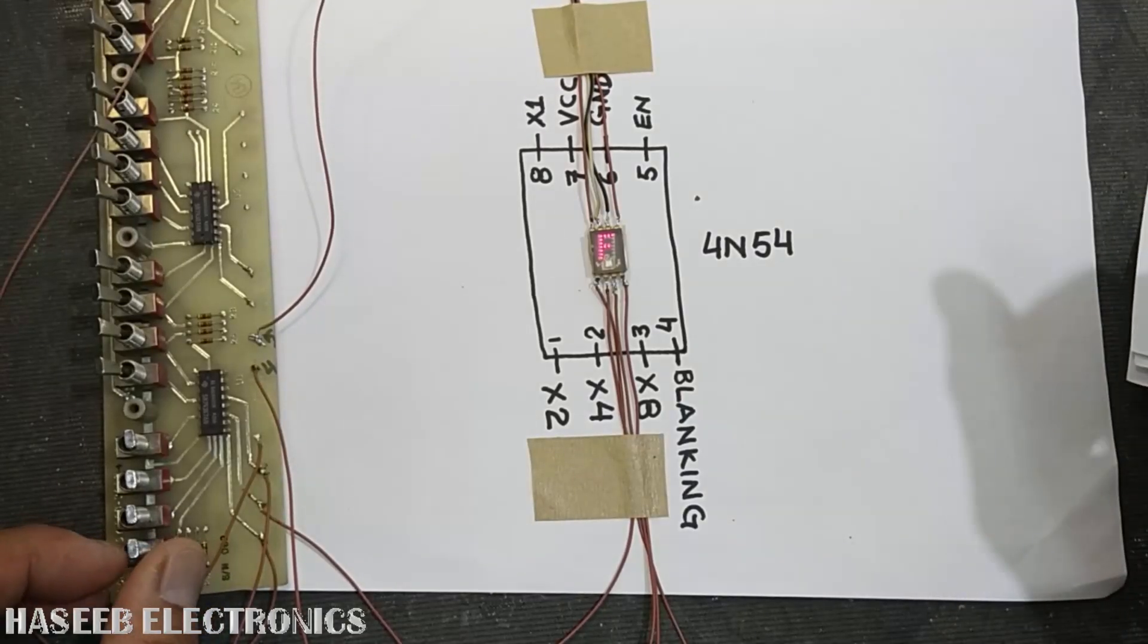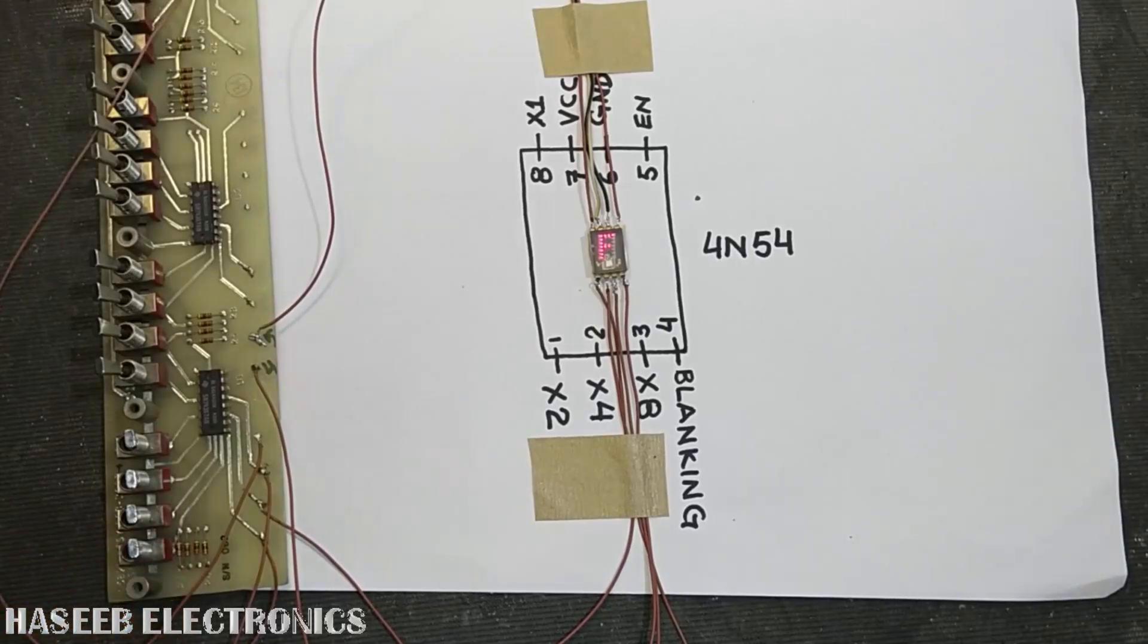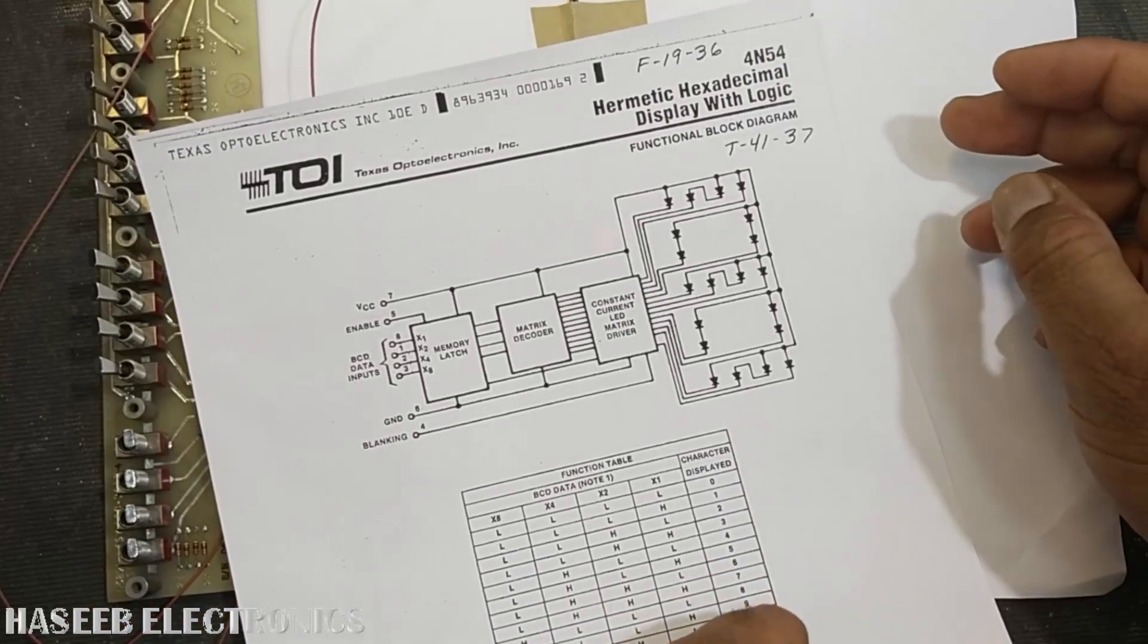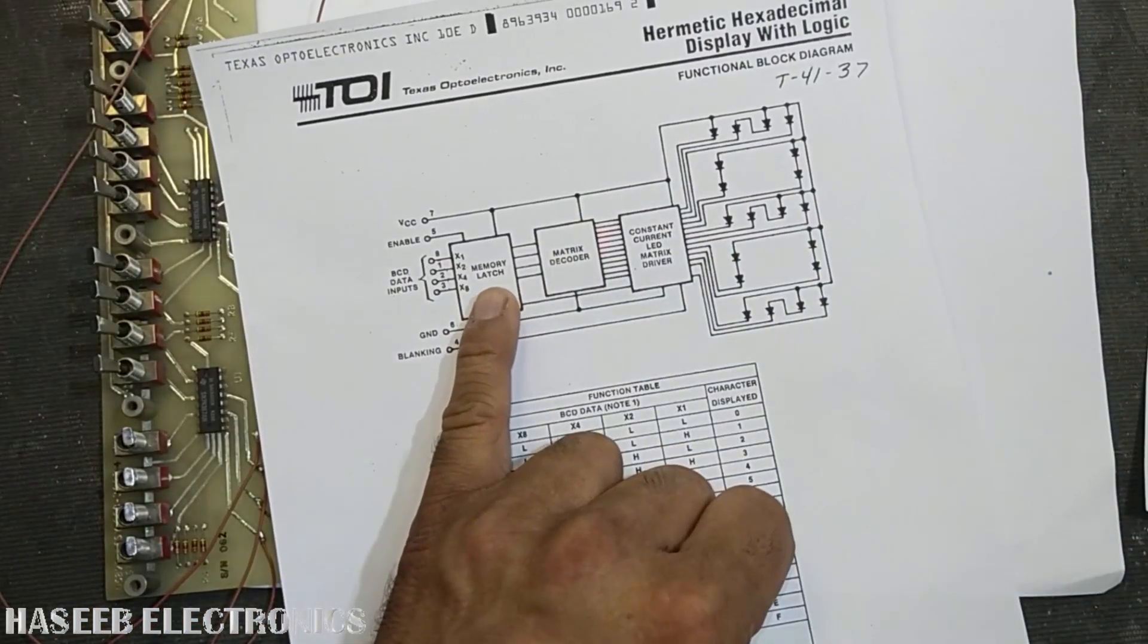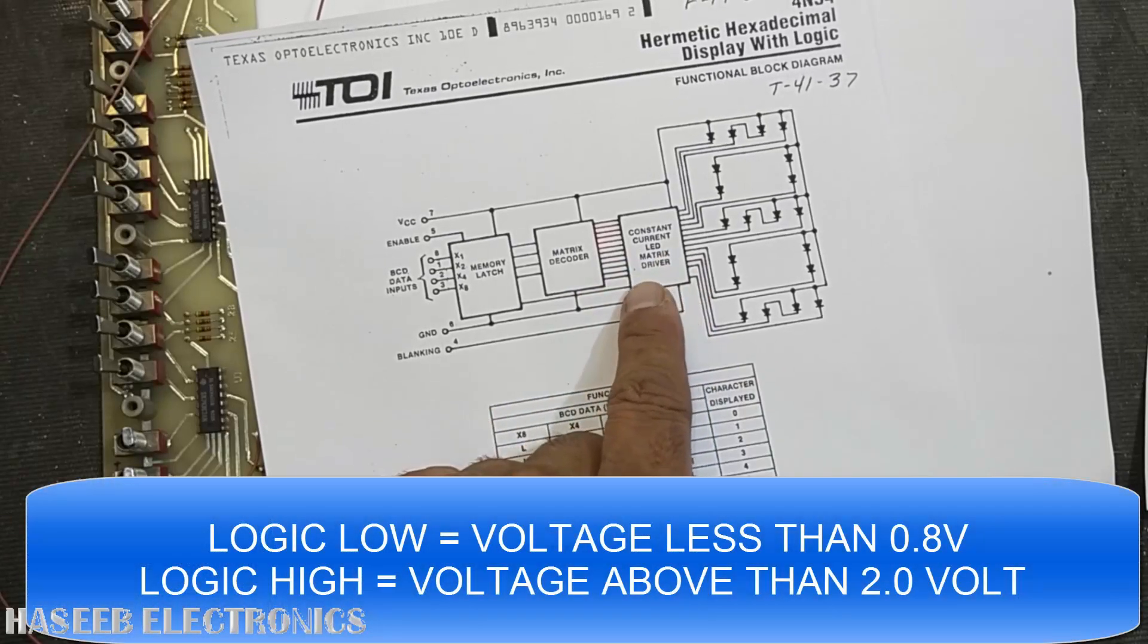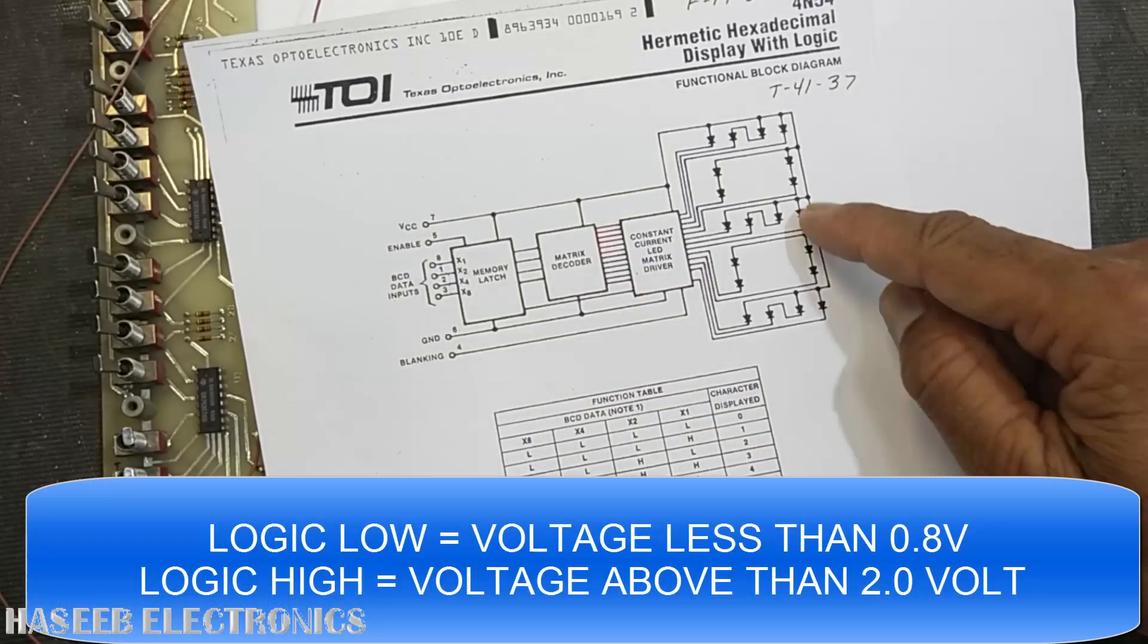It is from Texas Opto Electronics Incorporation. Its part number is 4N54. It is a TTL-based seven-segment display. It has a memory latch, matrix decoder, and constant current LED matrix driver, then it has the display.